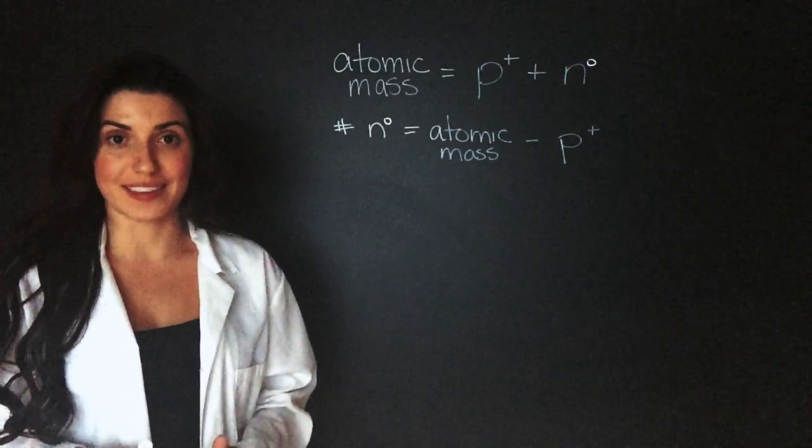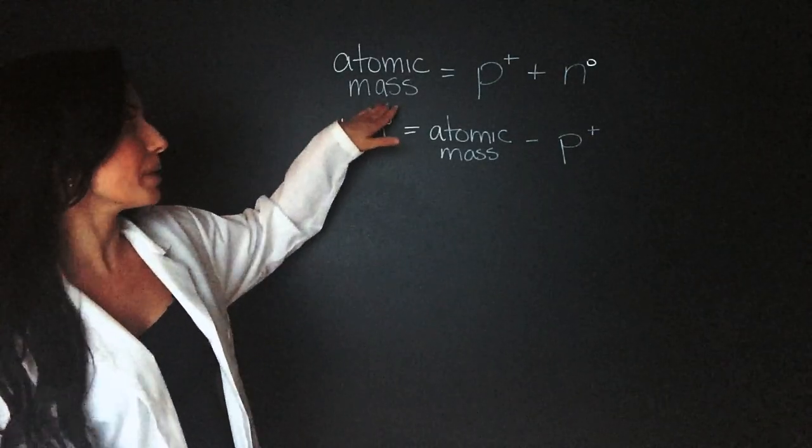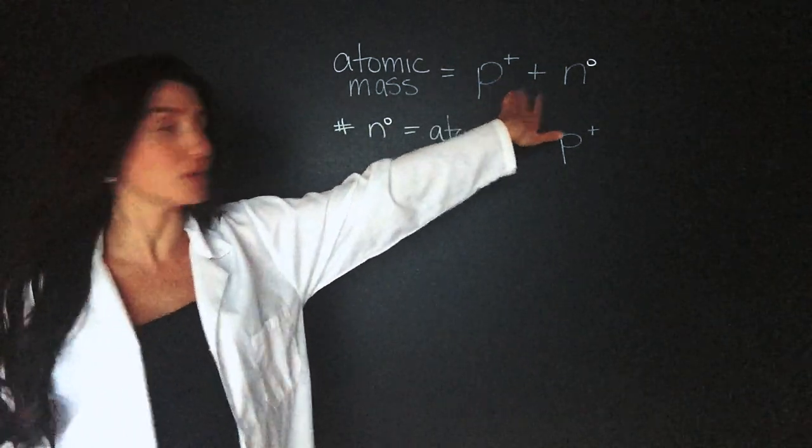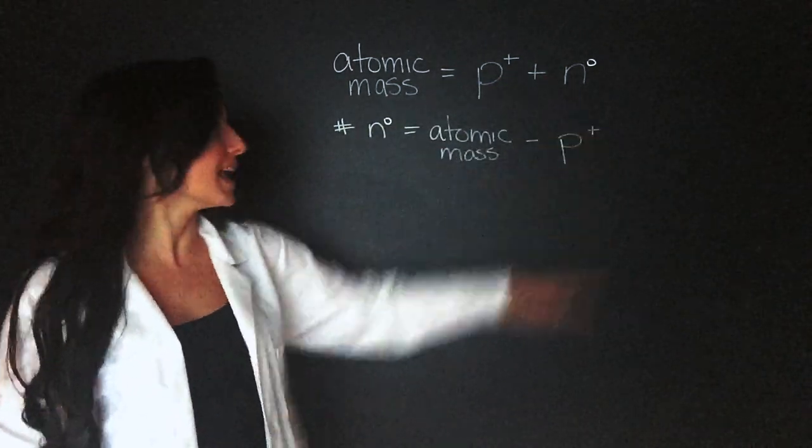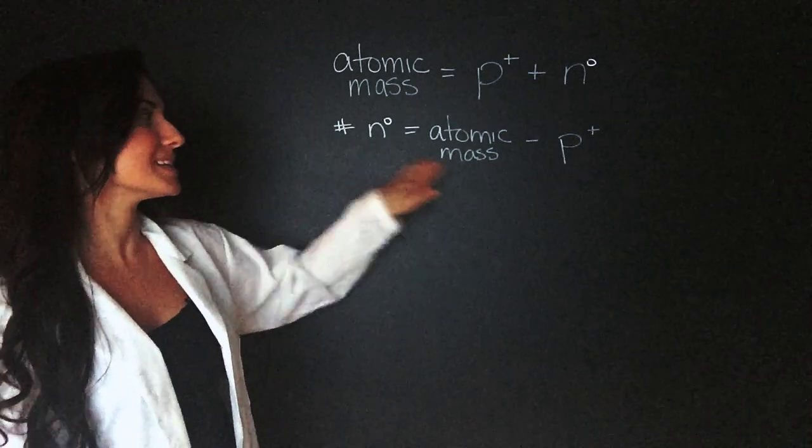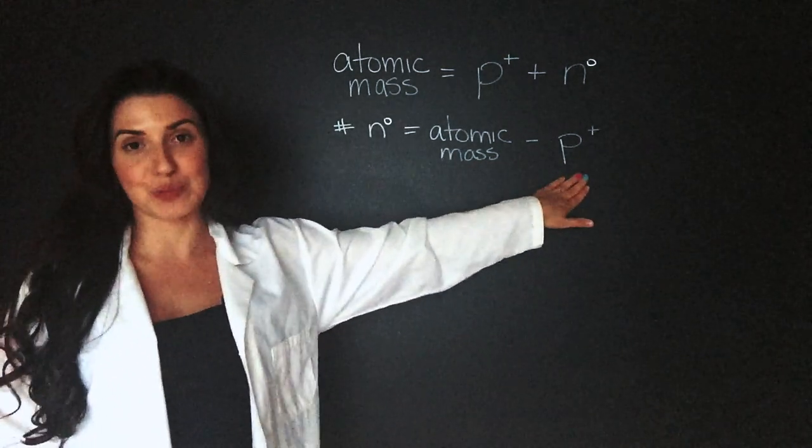The equation we use when trying to find the number of neutrons is that the atomic mass is equal to the number of protons plus the number of neutrons. If we rearrange that, we know that the number of neutrons is equal to the atomic mass minus protons.